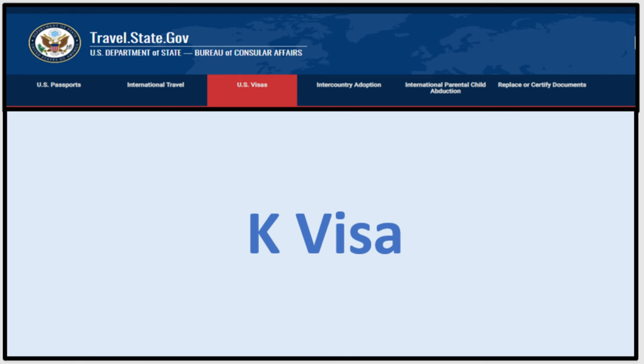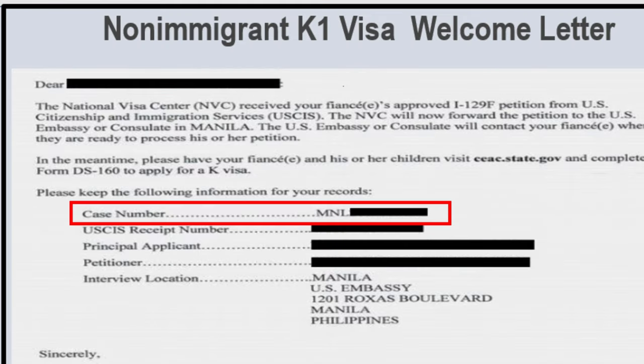Now let's go to K-Visa. This is the K-Visa welcome letter. It has only a case number — that's the important element and what you need to complete your immigration journey. It also has important information such as interview location, petition name, applicant name, and USCIS receipt number.